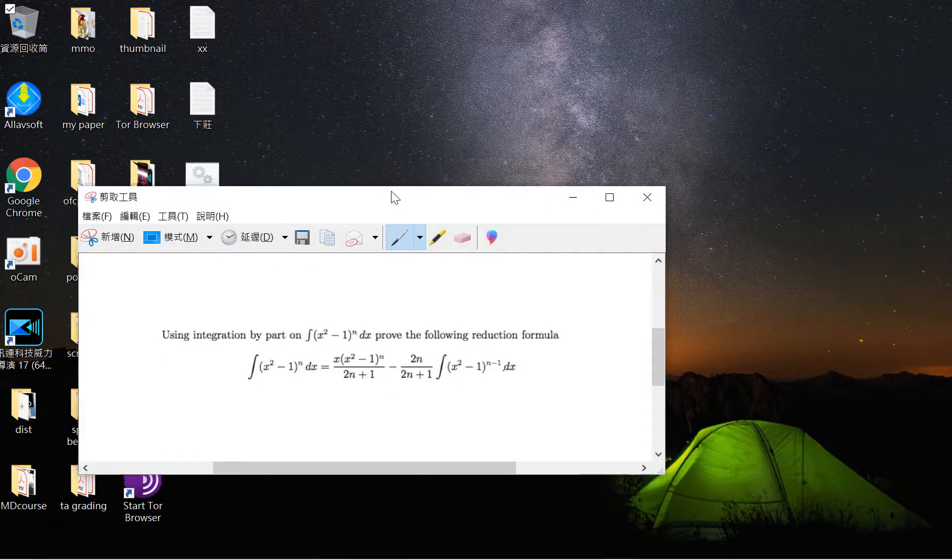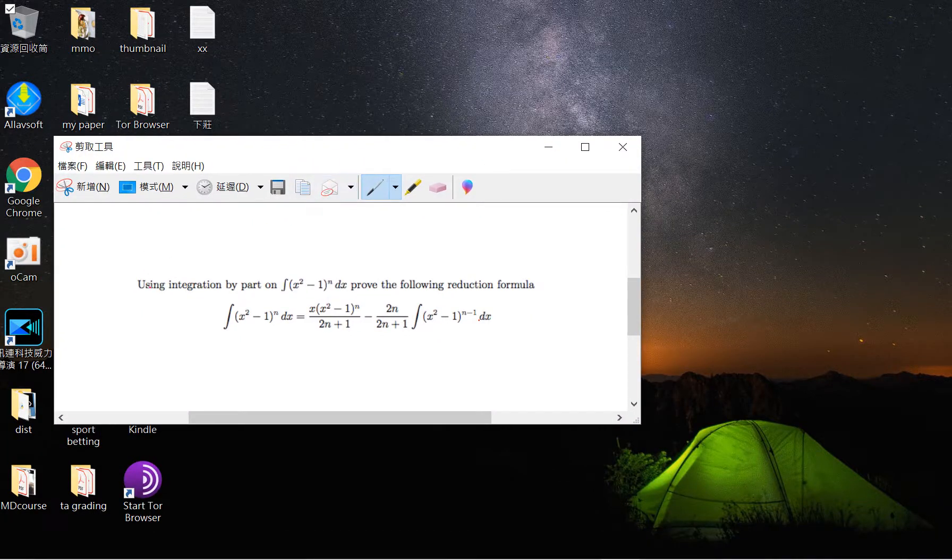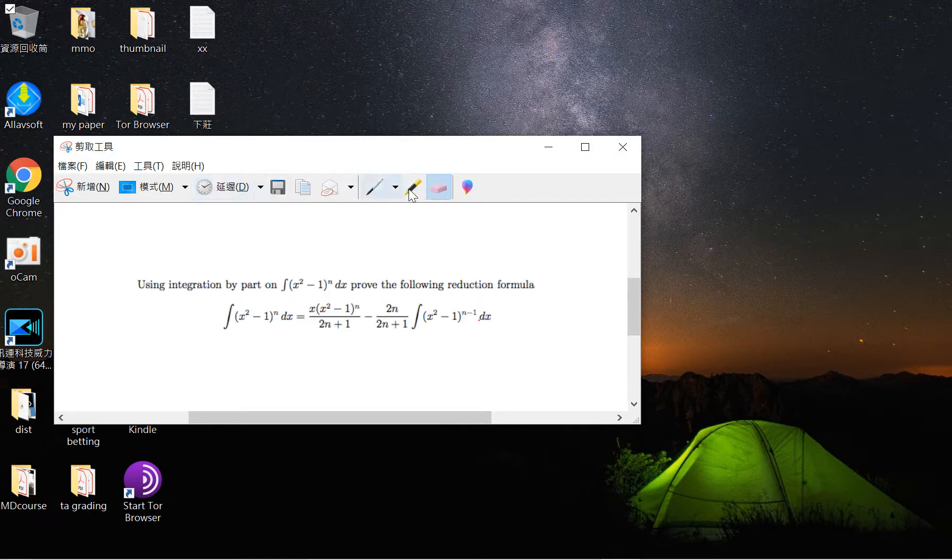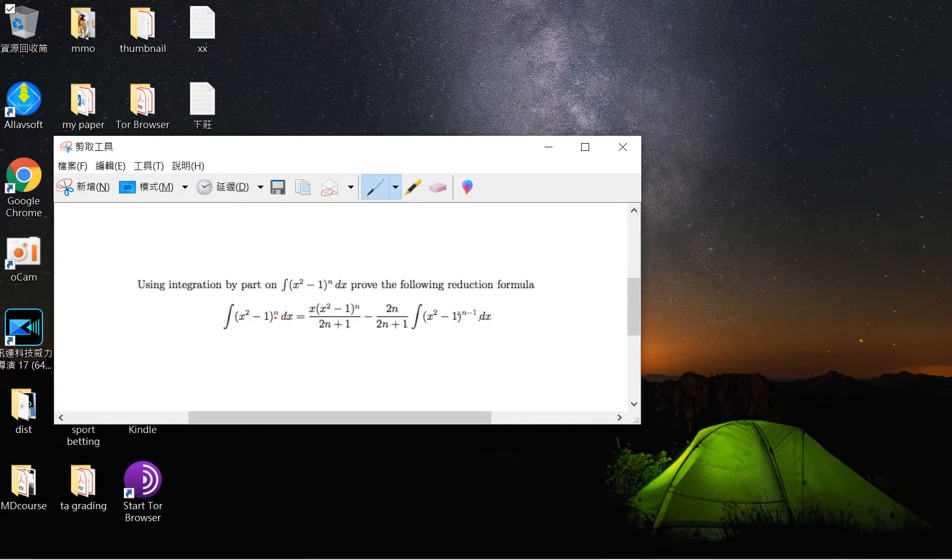Hi guys. So somebody asked me this question. It said use the integration by part on this x squared minus 1 to n dx and prove this formula. So basically this is the recursion formula that you guys can see. The left hand side contains the power n and the right hand side is n minus 1. And we want to prove this.